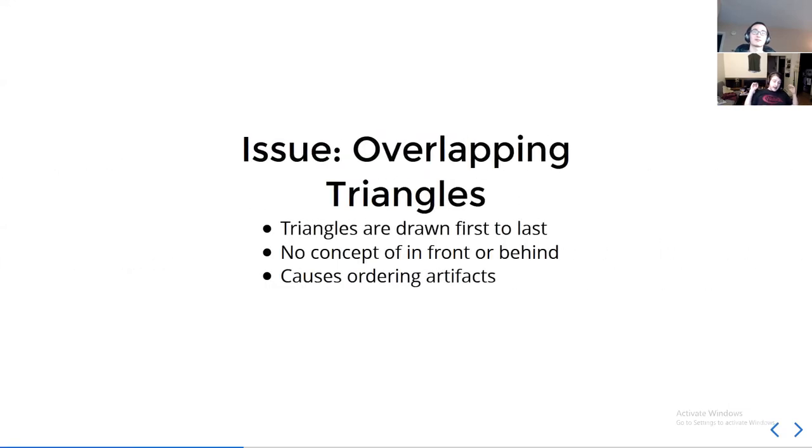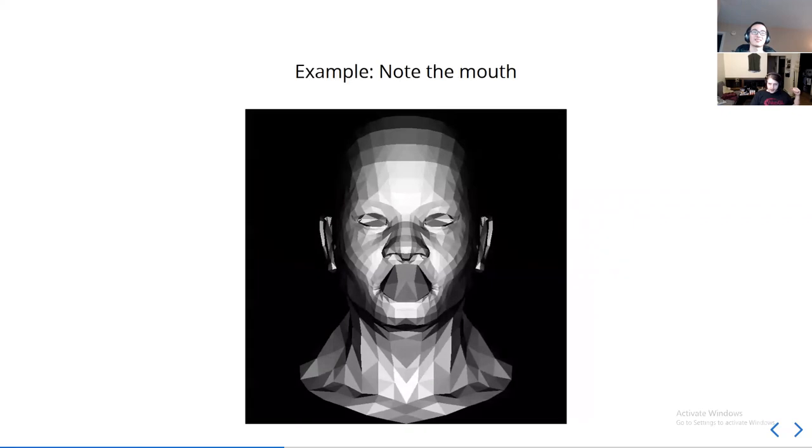In the last lesson we left with the issue where we had overlapping triangles where things were in front of things that should have been behind. And that's not good, looks ugly, it's an artifact. So let's try to fix it. Here's the visual example of what I'm talking about. You can see the eyes and the mouth just look a bit horrifying.